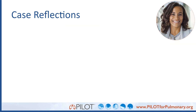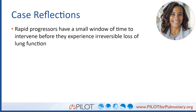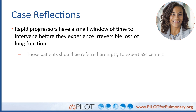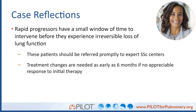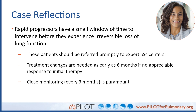Rapid progressors have a small window of time to intervene before experiencing irreversible loss of lung function. These patients should be referred promptly to experts, scleroderma centers, or ILD centers. Treatment changes are needed as early as six months if no appreciable response to initial therapy is observed. Close monitoring at least every three months is paramount to ensuring patients are responding to treatment, and if not, that they receive alternate treatment.